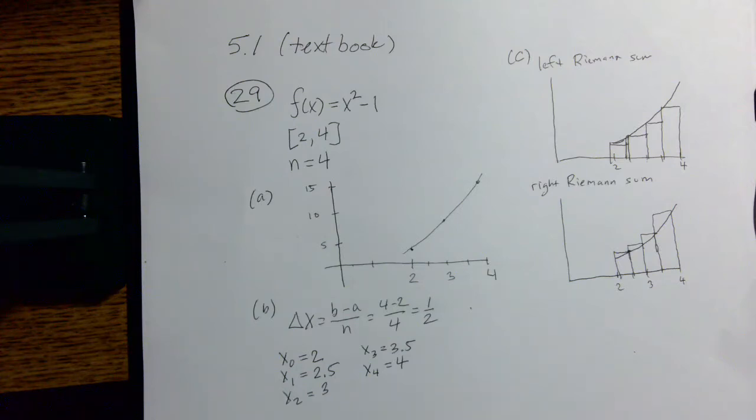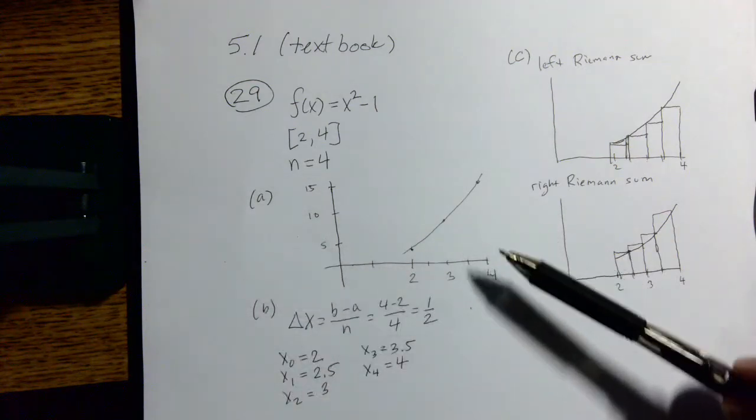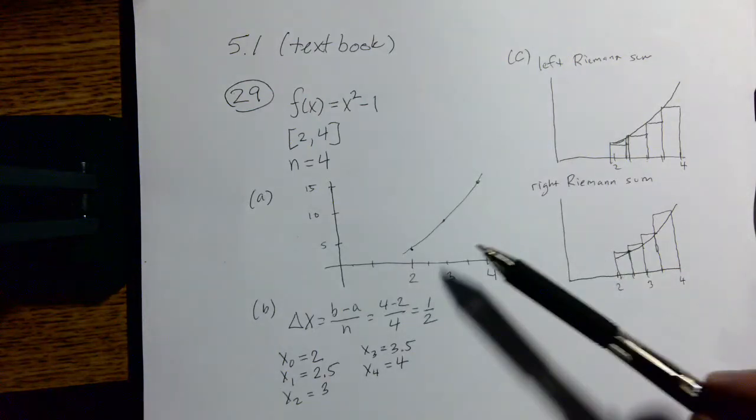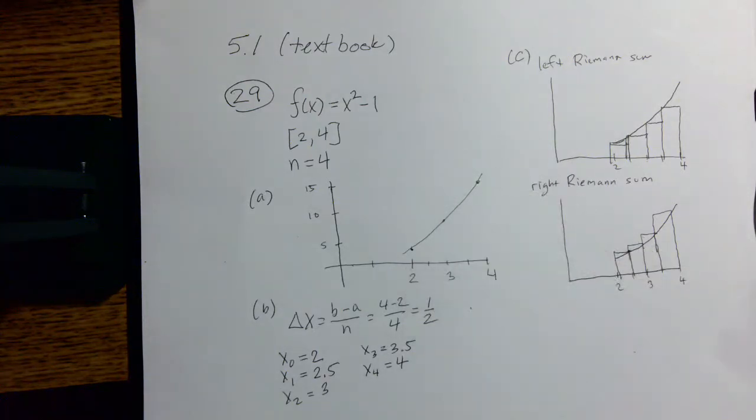Something that we'll get into in chapter 5 that is not part of this particular example is how things change if the function may take on negative values over part of the interval. That's a little bit more complicated. Here we'll just focus on this function that is positive throughout the interval.